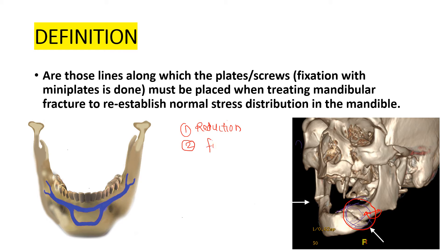The next principle is fixation. Now that you have the segments in their proper original position, you need to fix them, which can be done with plates or screws. The third principle is immobilization. When the fracture is healing, the outcome is positive when it is immobilized properly. If there is mobilization, healing will be delayed. So the third principle for any fracture treatment is immobilization — keeping that area immobilized for the required time so it heals properly.